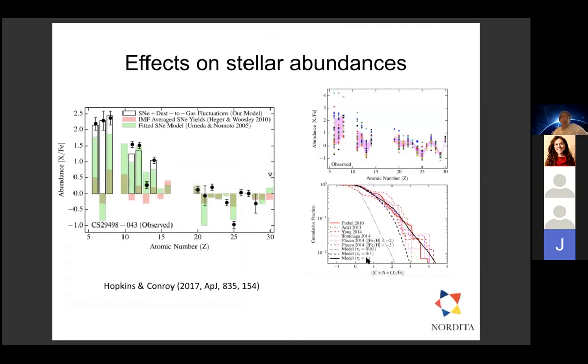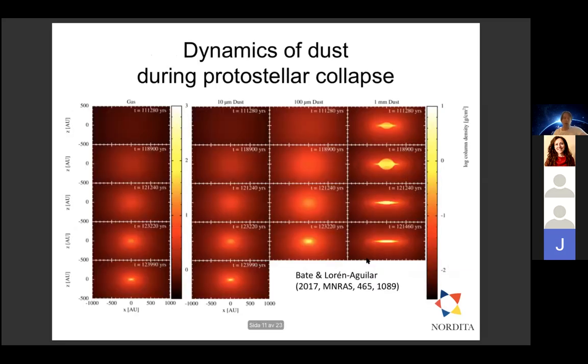Removing metals via dust can alter the compositions of new stars. Here's an example from work by Hopkins and Conroy based on the simulations by Hopkins and Lee. Adding dust-gas separation seems to explain the abundance patterns of, for example, the star with a wonderful name of CS 29498-043, and you can also see that variance is explained, the general variance in the stars' lower metallicity for example.